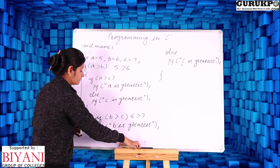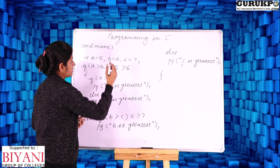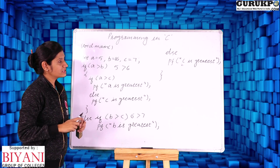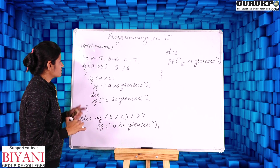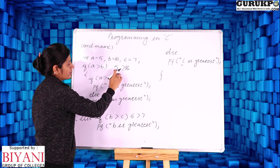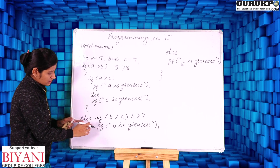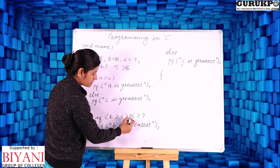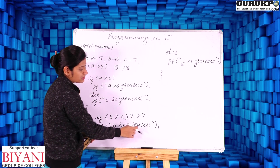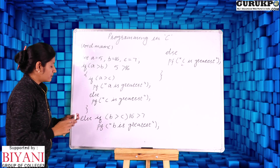Now let us change the values — let us make b equal to 16, so in this case b should be greatest. We check a greater than b: a is 5 and b is 16, so 5 greater than 16 is false. We come to the else part and check b greater than c, that is 16 greater than 7 — yes, it is true. So we print b is greatest and skip the else part. We are getting the correct message.